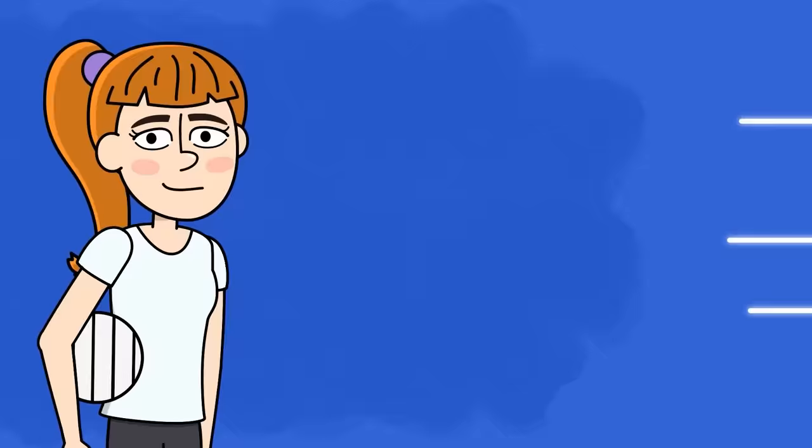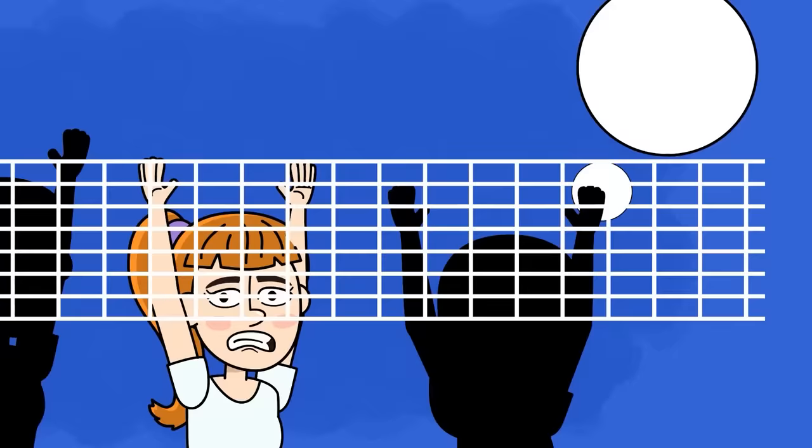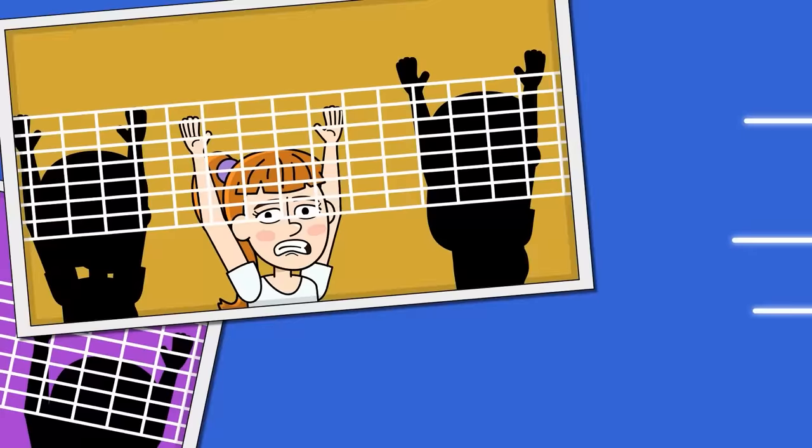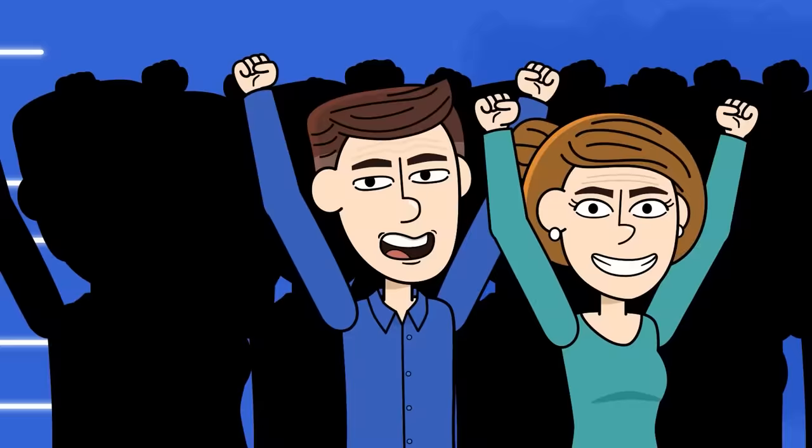My twin sister Rose is on the volleyball team at school, but her team is doing so bad that they don't have a single win. Yet they still participate in all the high school level tournaments, and naturally they come in last. Despite this fact, my parents would go to every single game of hers.